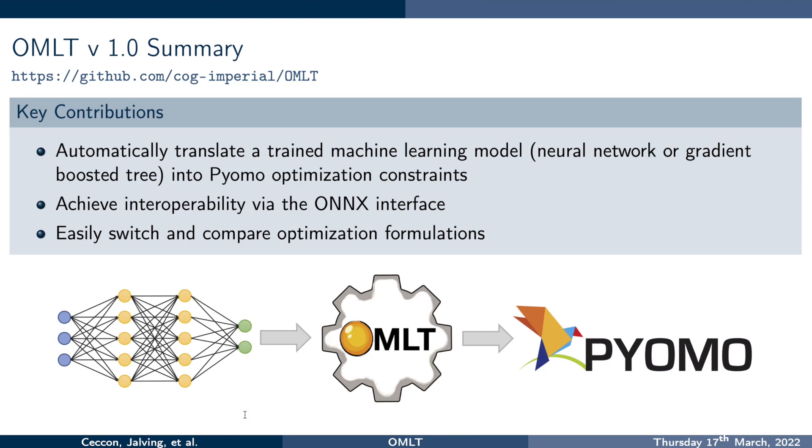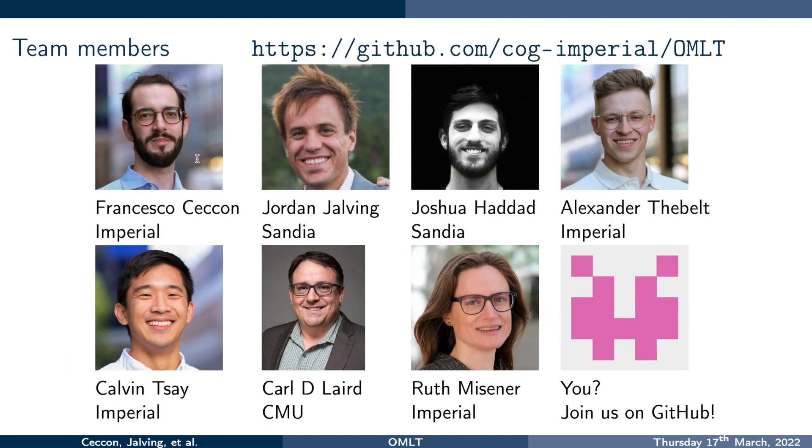What is special about omelette and what I'm so excited about is that we can automatically translate a trained machine learning model, currently neural networks or gradient boosted trees, into PyOMO optimization constraints. We have really nice interoperability via the ONNX interface, and we can easily switch and compare formulations. If you want to join our awesome team, please find us on GitHub. We're really looking forward to working with you.